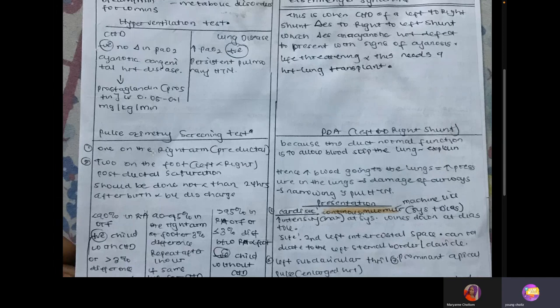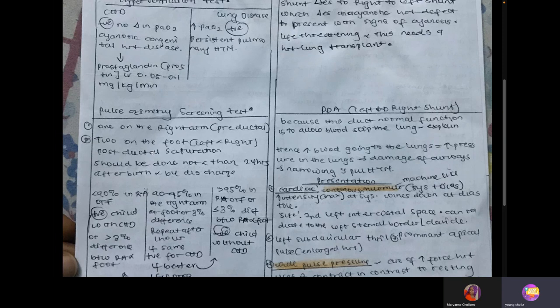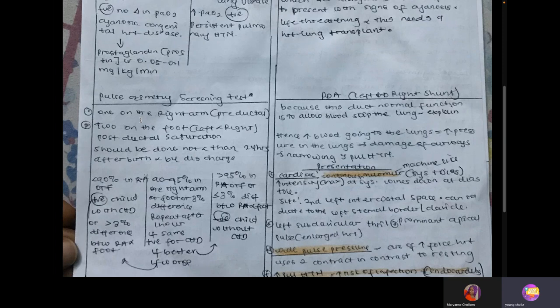Question 22 is pulse oximetry screening, performed before you discharge the newborn. You place one probe on the right arm, which measures pre-ductal oxygen saturation — before the ductus arteriosus — and one on each foot, measuring post-ductal saturation. That is three probes in total.